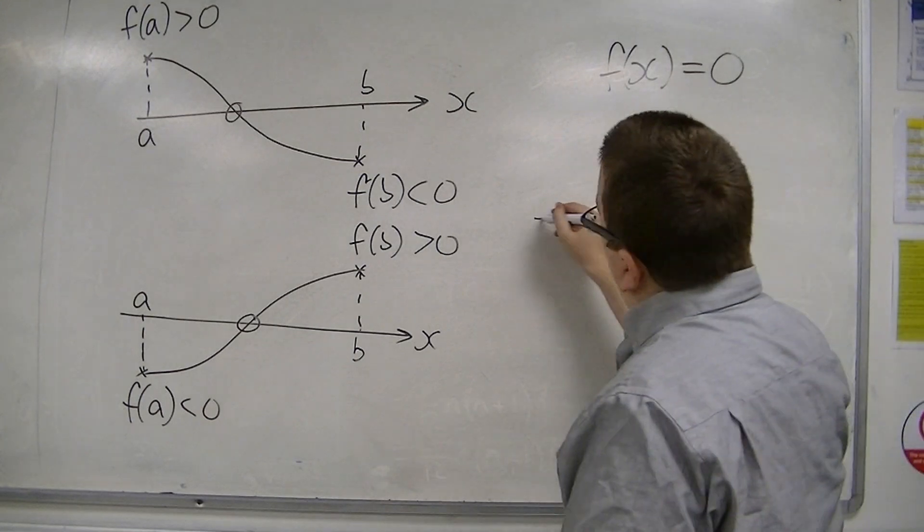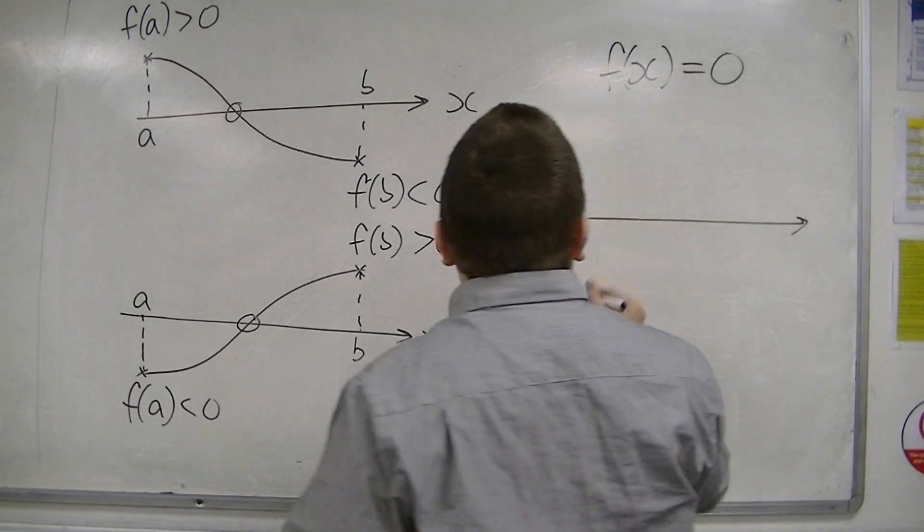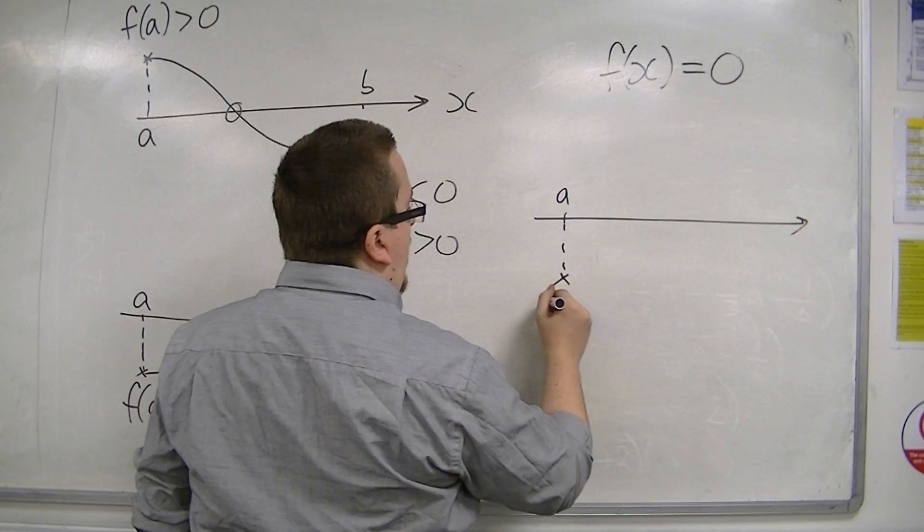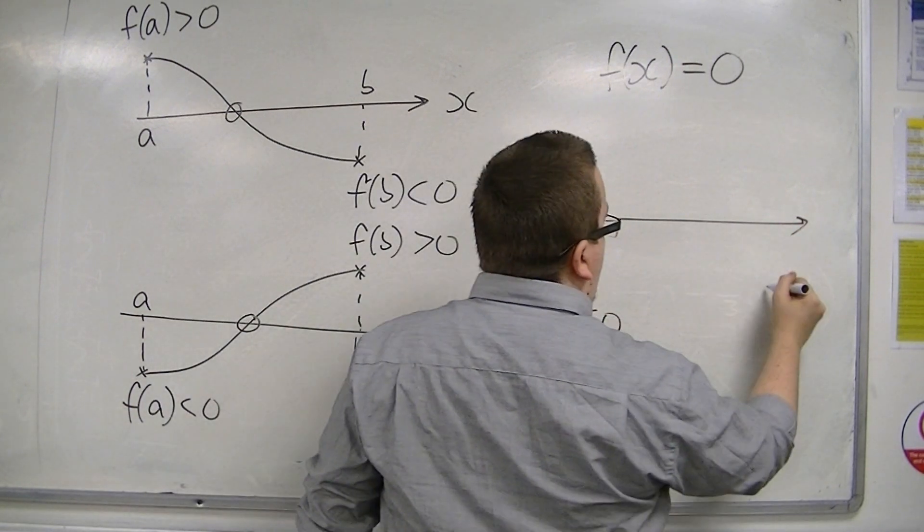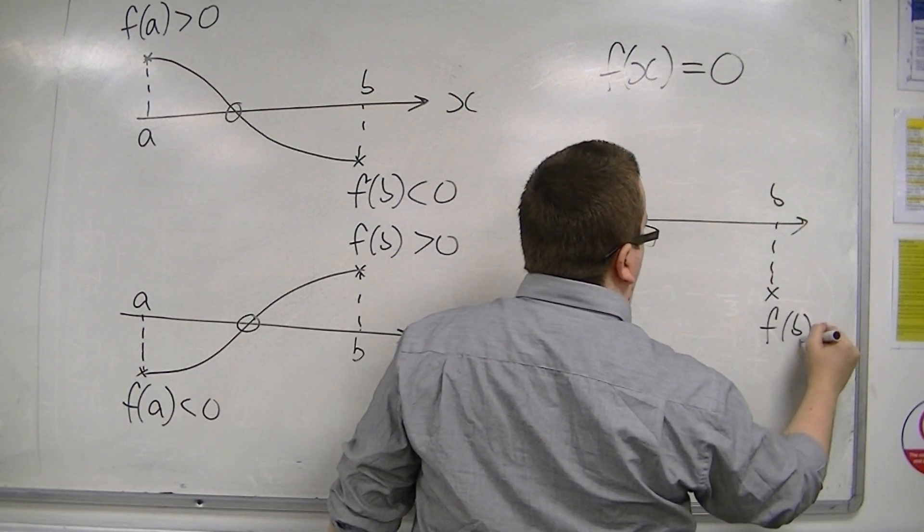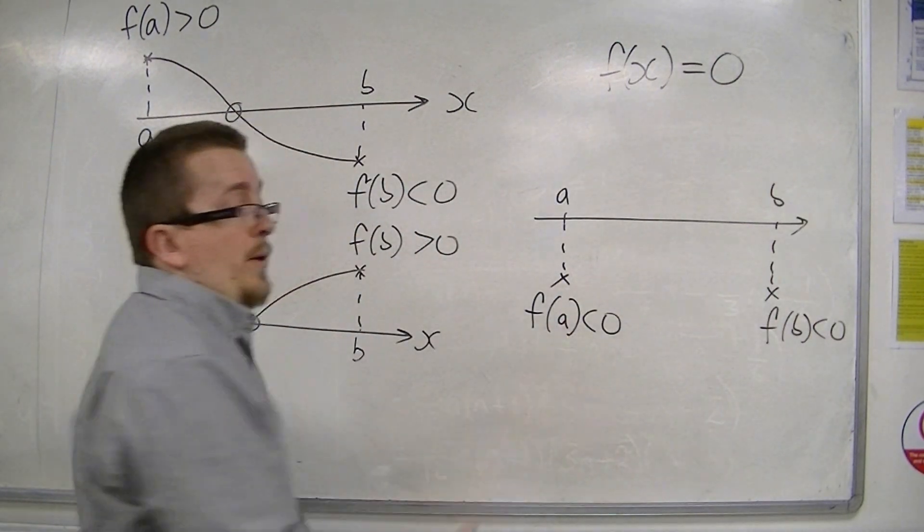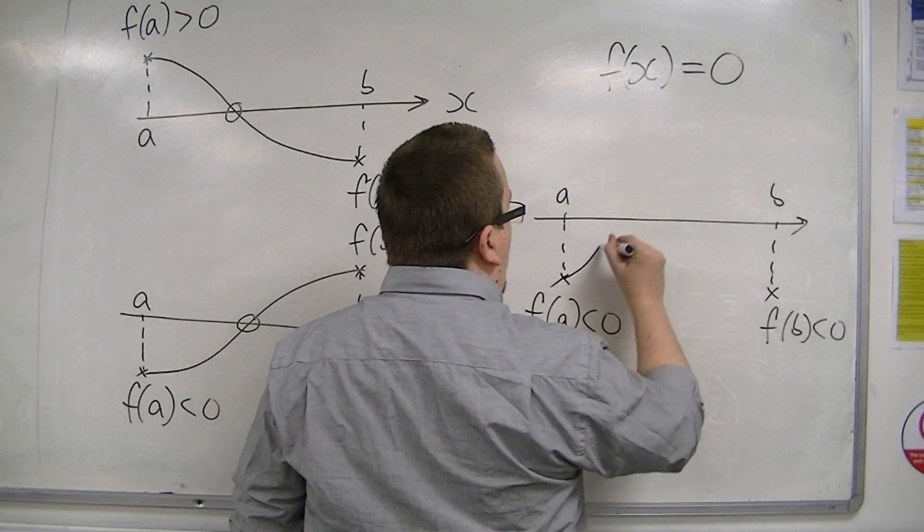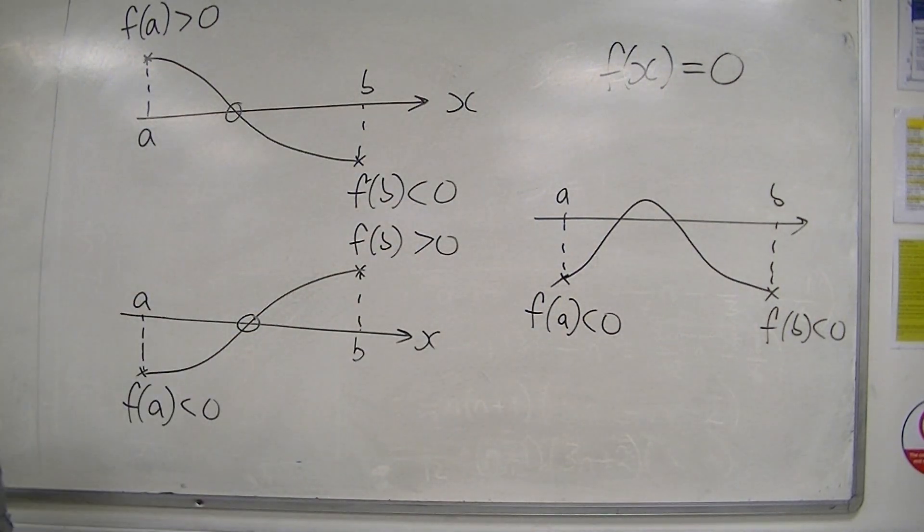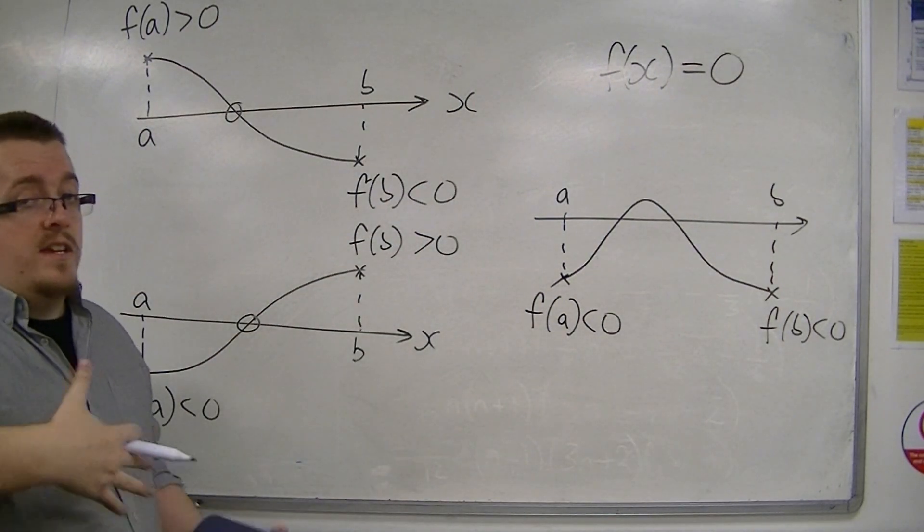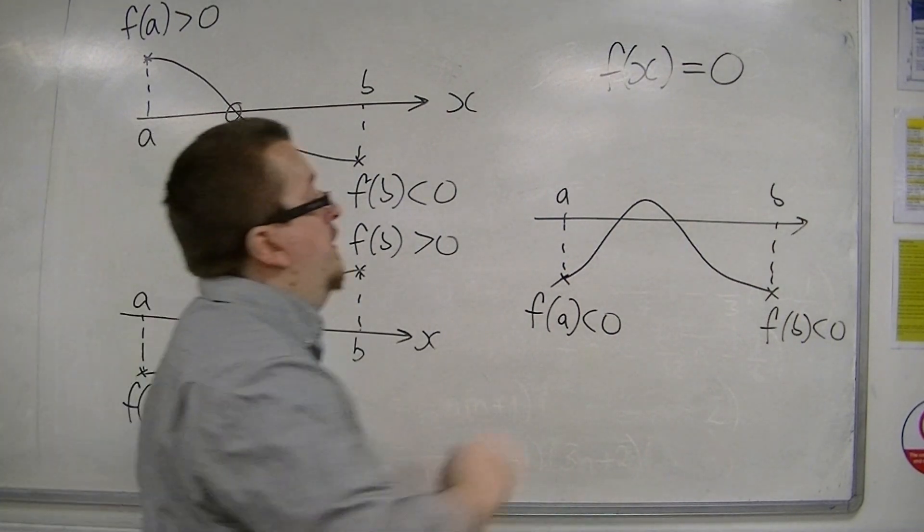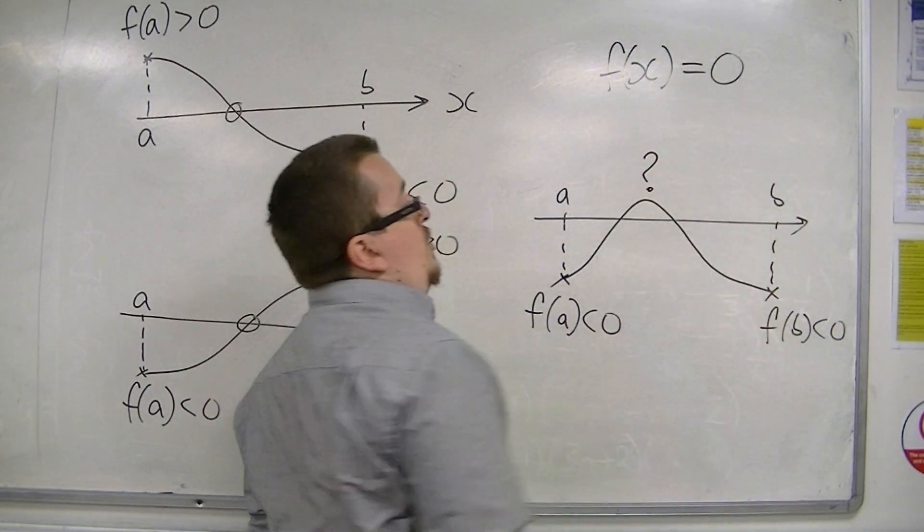Of course, if I look at another example, where if I'm plugging in f of A, and that's negative, and then plugged in another point, B, and that was also negative, or if they were both positive, then the curve may well cross the x-axis, or it might not, but I cannot tell. So, I would have to do a little bit more investigation to see if this actually happened.